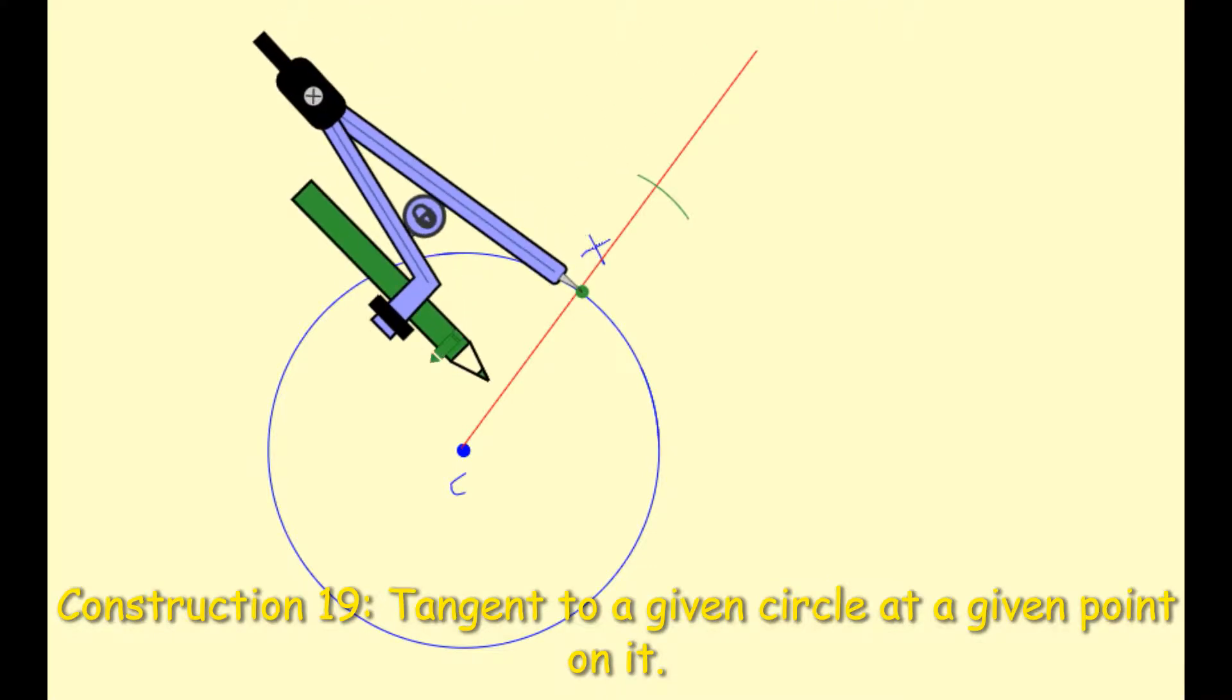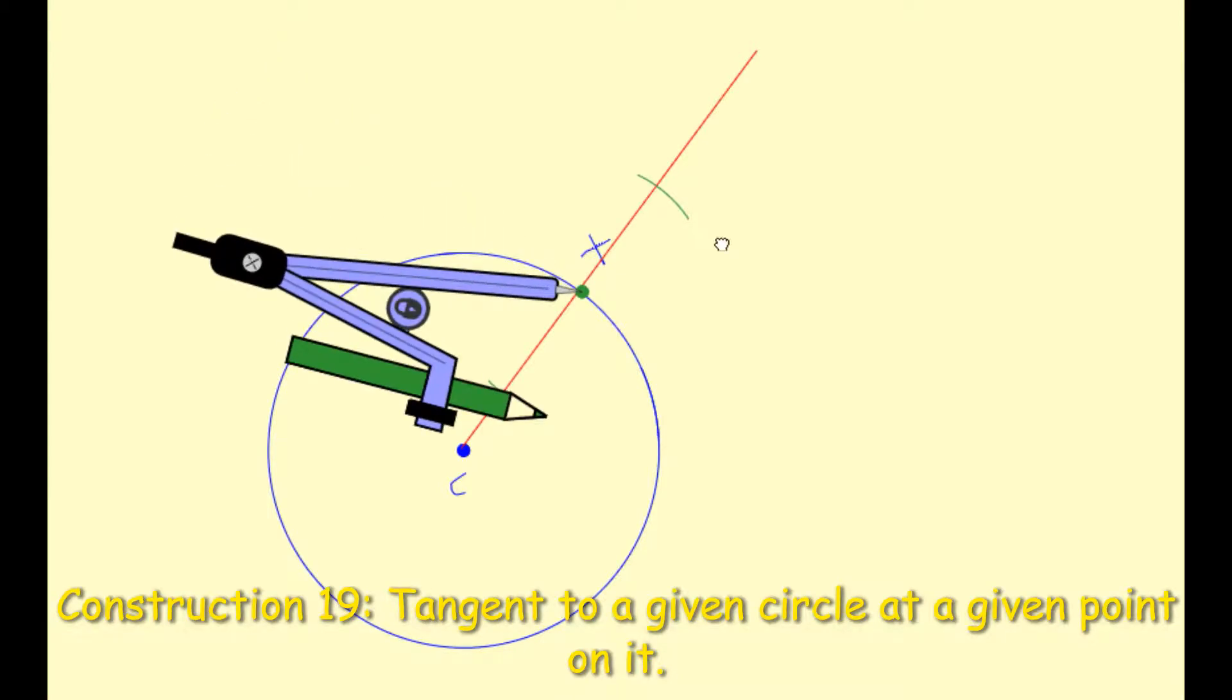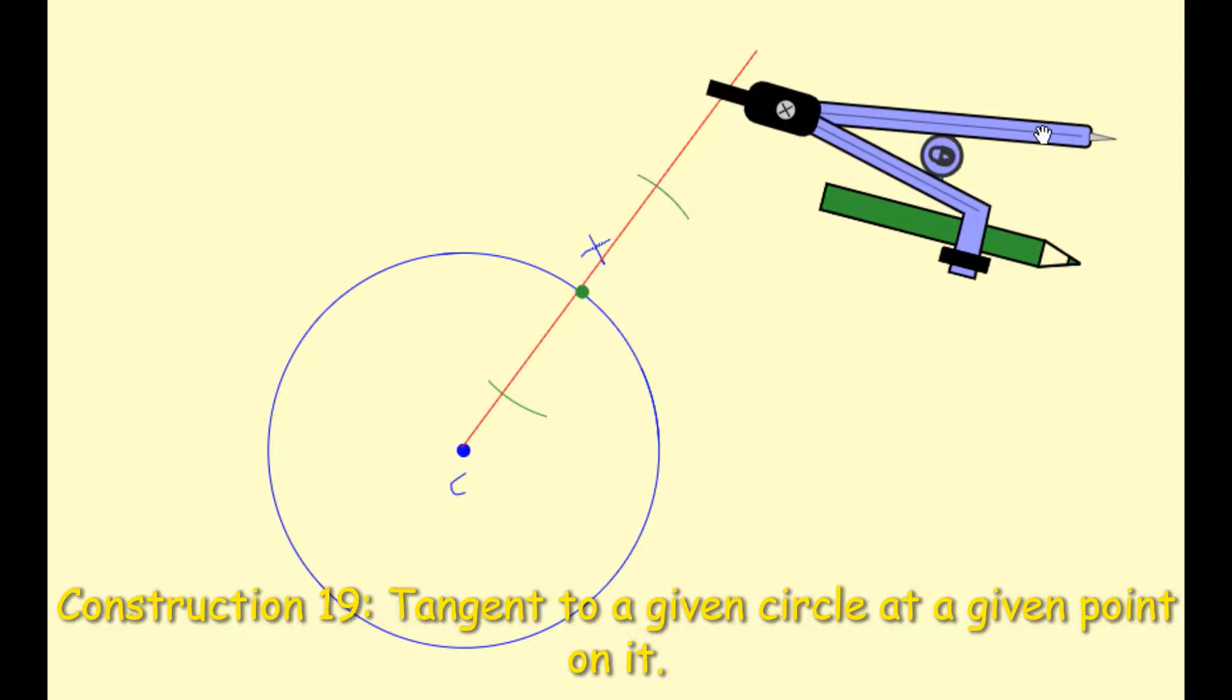So it just has to be between X and C, but just be consistent. So there we are. There's my second arc. So that's all I've done. I've drawn two arcs along that line segment created from the point X.